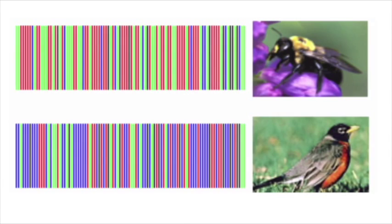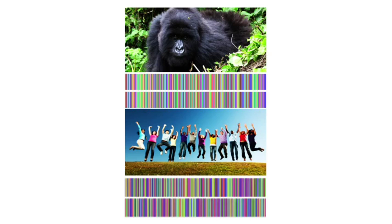DNA barcoding compares either or both nucleotide sequences and base pair size to determine relation. Just look at humans compared to a gorilla — nothing alike. Yet when humans are placed next to Neanderthal and Denisovan, you can easily see the match. And when the gorilla is added at the bottom, look how completely different it is.